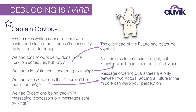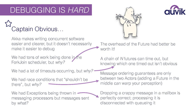We would have exceptions being thrown in message processors from messages sent by who knows what. You can easily drop a really bad message into someone's mailbox — binary data that will cause a parser to throw an exception. Dropping that message into the mailbox is perfectly fine at enqueue time; the thread returns fine. But eight weeks later when you start processing that message, it throws an exception, making it difficult to debug where it came from. There was a strategy for dealing with that, though it was very difficult to implement early in a project like this.